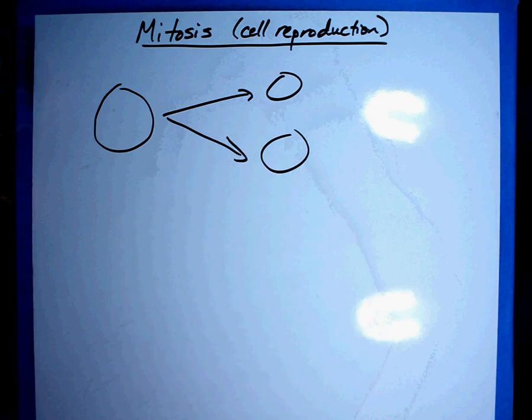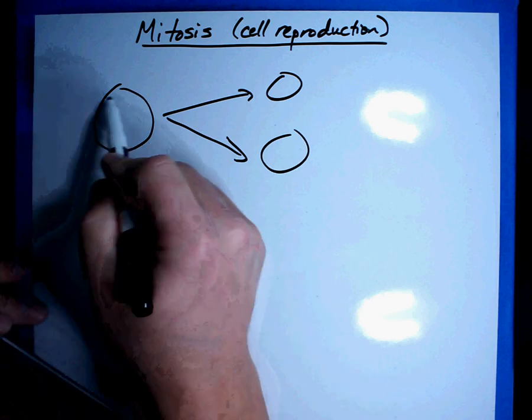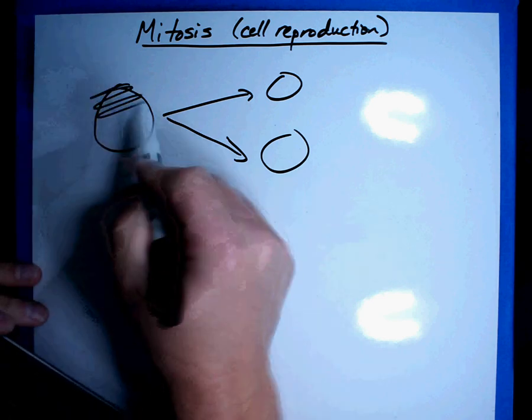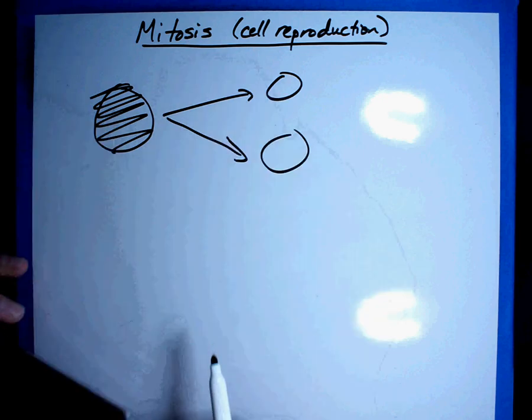The reason we want to do that is a couple of different reasons. Sometimes cells get very old. When they get really old, they don't function correctly and so we'll end up producing two new cells to take its place.